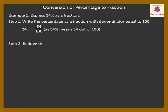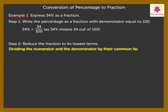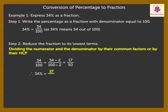Step 2 is to reduce the fraction to its lowest terms. We can reduce a fraction to its lowest terms by dividing the numerator and the denominator by their common factors or by their HCF. Hence, dividing 34 upon 100 by 2, we get 17 upon 50. Therefore, 34% is equal to 17 upon 50.